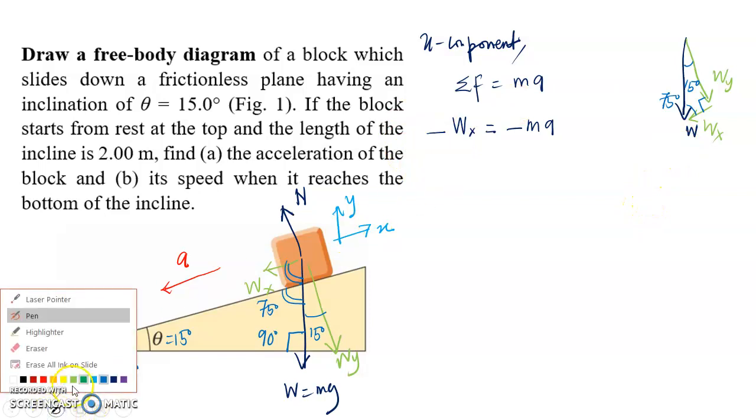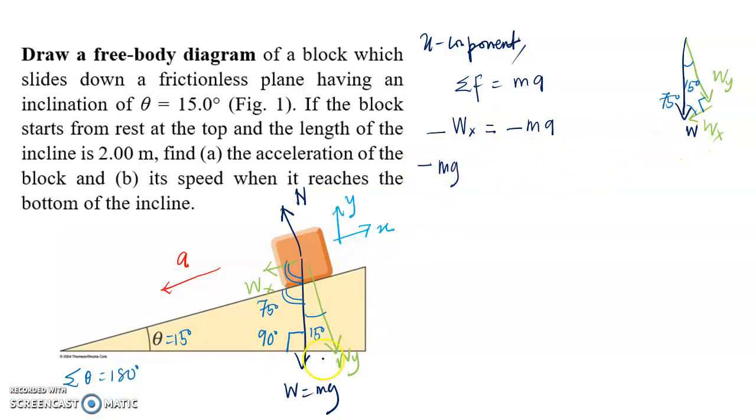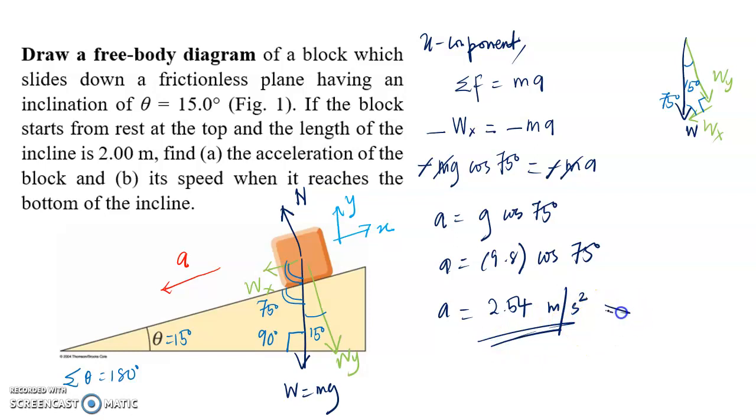So we can continue with our equation. For W_X, it is going to be equal to mg, which is the weight, multiplied with cos 75 degrees, equals negative ma. Because m appears on both sides of the equation, we can eliminate m as well as the negative sign. So a equals g cos 75 degrees. Now we can substitute the value for g, which is 9.8, multiplied with cos 75 degrees, and it equals 2.54 meters per second squared. This is the correct final answer.